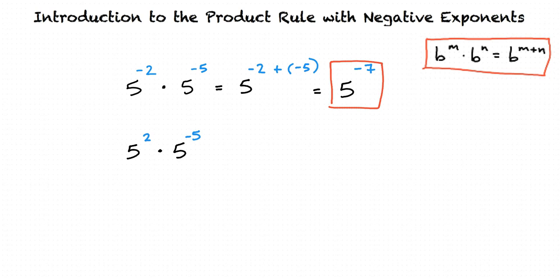Try 5 squared times 5 to the negative fifth power. From what we learned, because each exponential has a base of 5, we can add the exponents, just like in the other examples, written like this. 5 to the 2 plus negative 5.